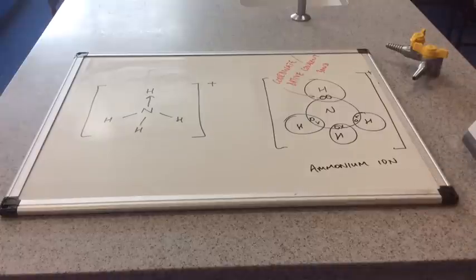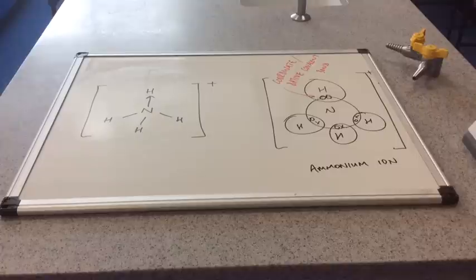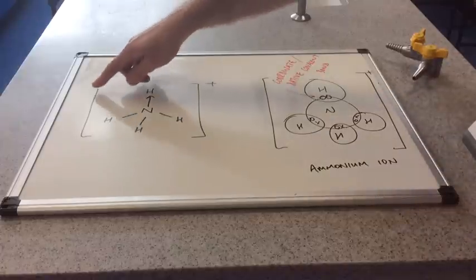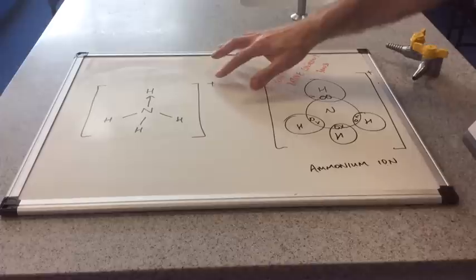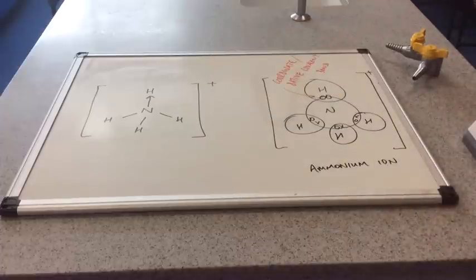We've still got charge because it's made from NH3, which is neutral, and an H plus ion, so the product must still carry that positive charge. That's why we wrap it in the square brackets with the charge in the top right hand corner.